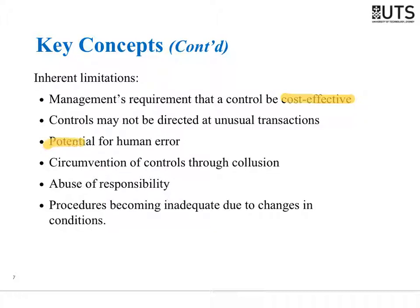As long as you have humans involved in a process, there's a risk of error. We get sick, we get tired, we make mistakes. So as long as humans are involved in a control, there's a risk of something going wrong. We won't make mistakes all the time, but we can sometimes, and that's an inherent limitation of controls.